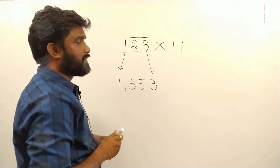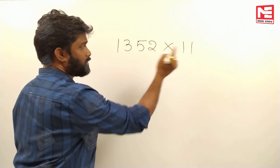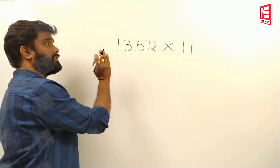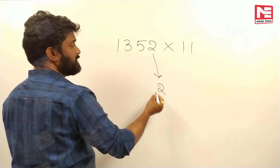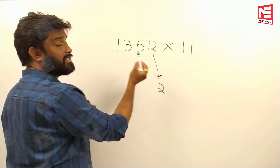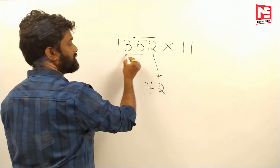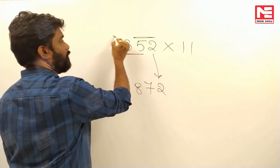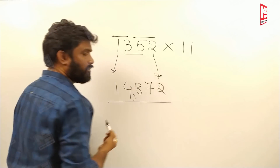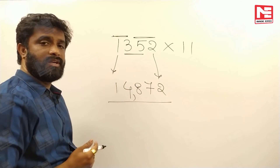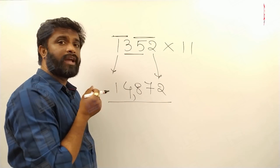Let's take the four-digit number 1352 into 11. Starting from the units place: 2 comes as 2. Then add adjacent digits — 5 plus 2 gives 7, 5 plus 3 gives 8, 1 plus 3 gives 4, and 1 comes as 1. So your answer is 14872.